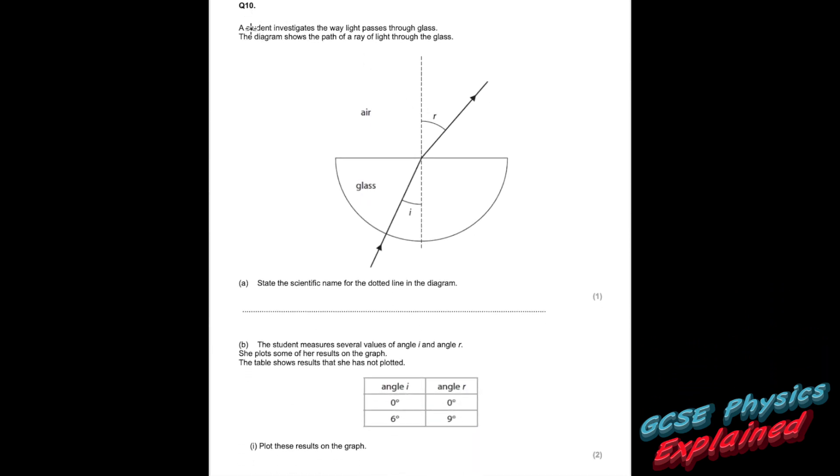Question 10. The student investigates the way light passes through glass. The diagram shows the path of a ray of light through the glass. State the scientific name for the dotted line in the diagram. Well that's the normal. You are supposed to know that.